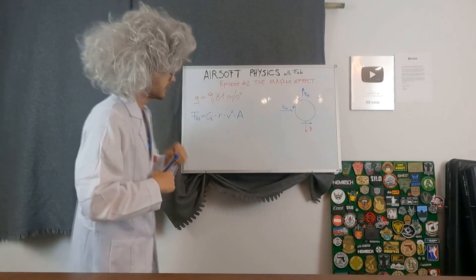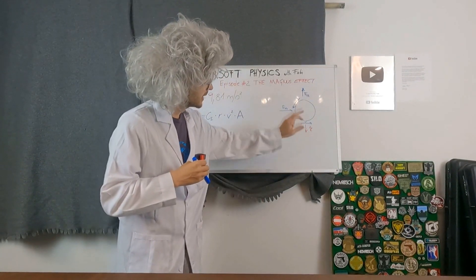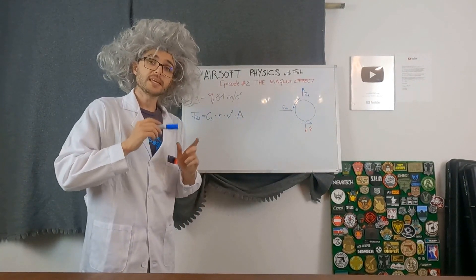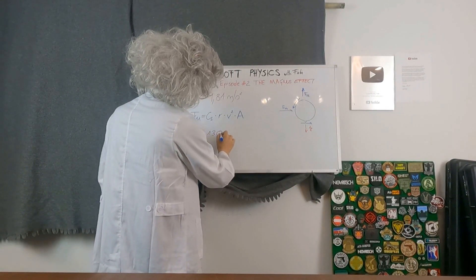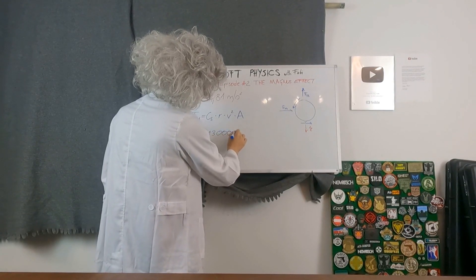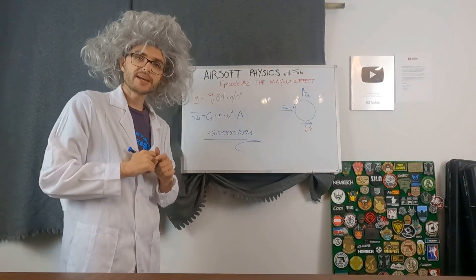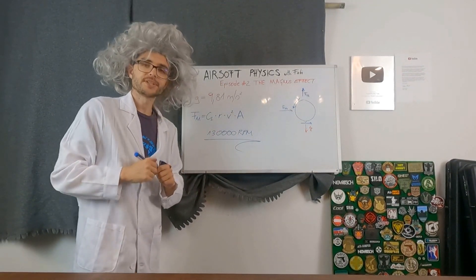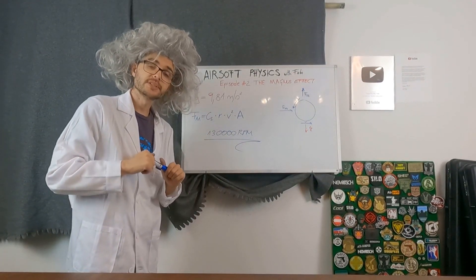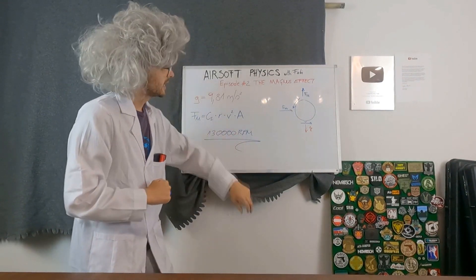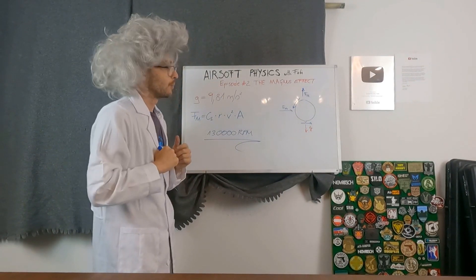In case you're wondering how fast a BB needs to spin to nullify the gravity force, it is around 130,000 rpm. This spin is the spin you guys are always putting on to your BBs with your hop-up. So 130,000 revolutions per minute, which means it turns 130,000 times in one minute.